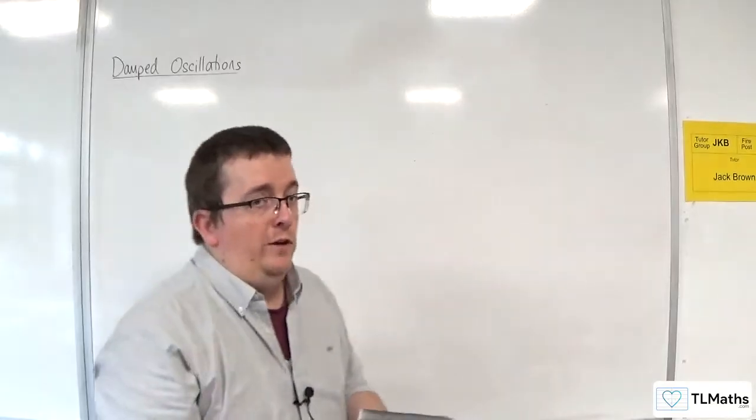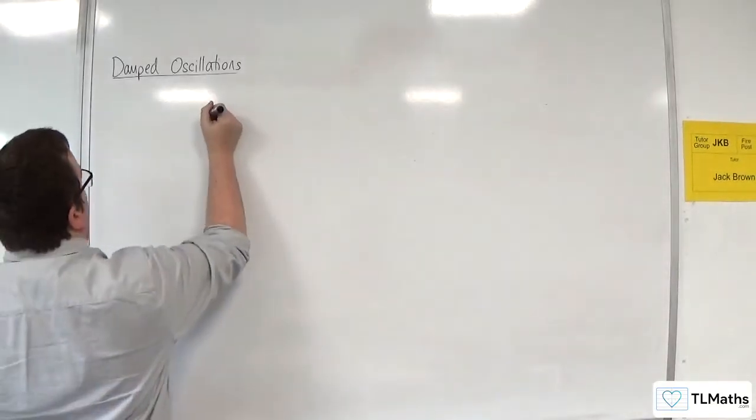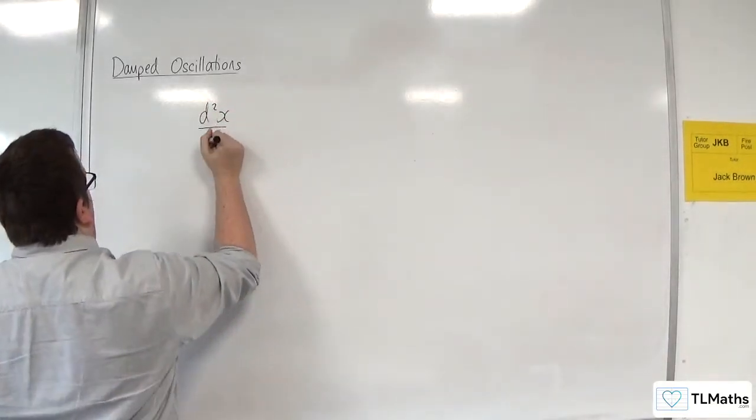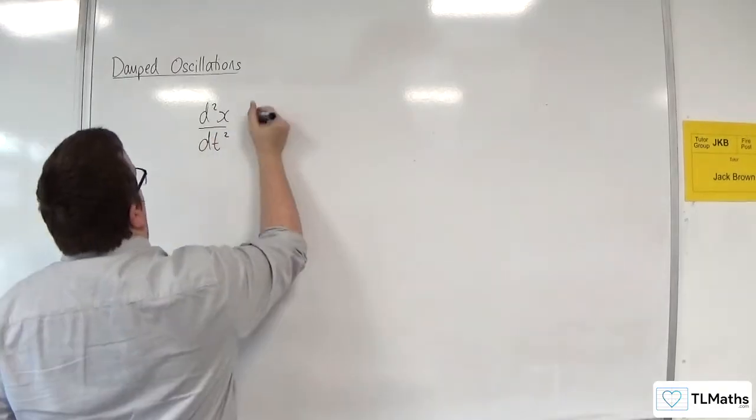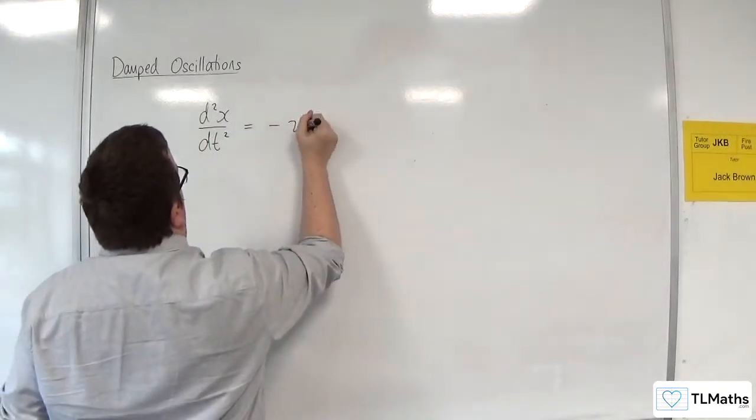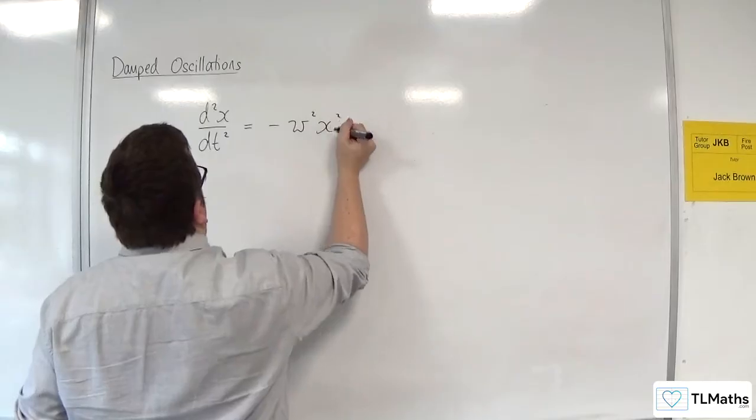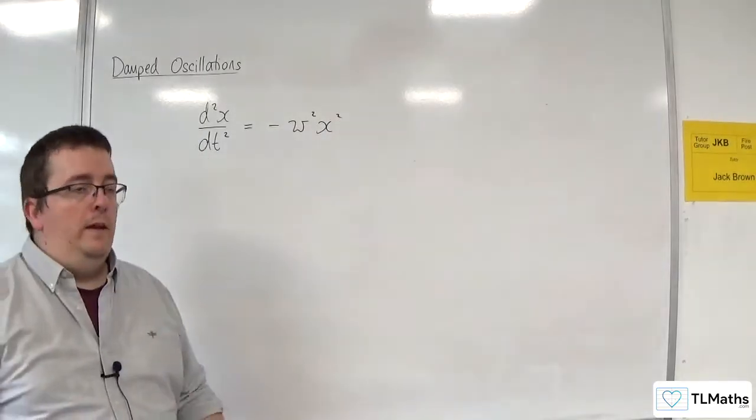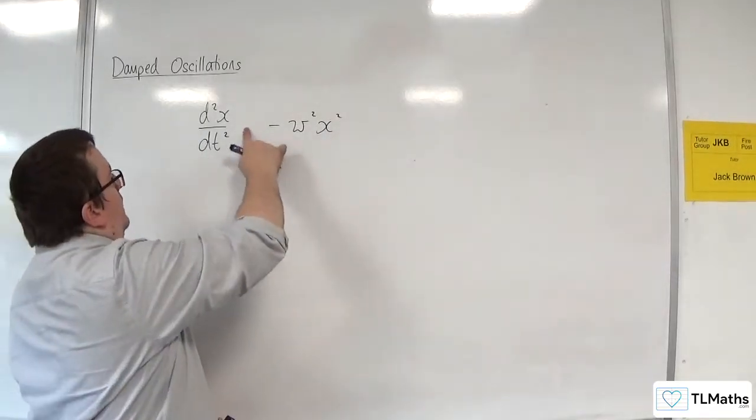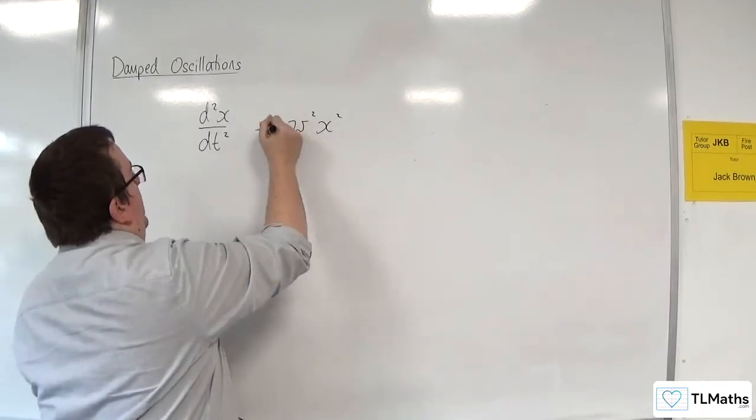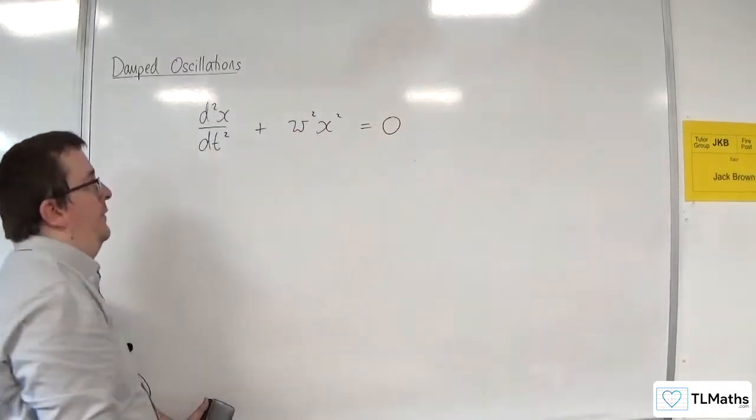So in the previous section, we looked at simple harmonic motion. d²x/dt² is equal to minus ω²x.